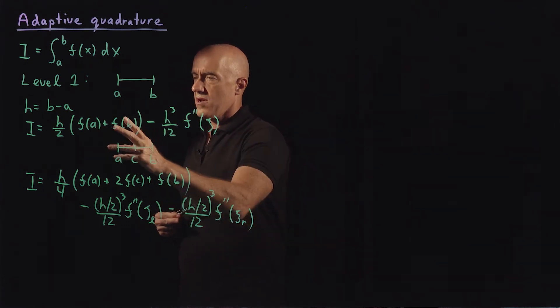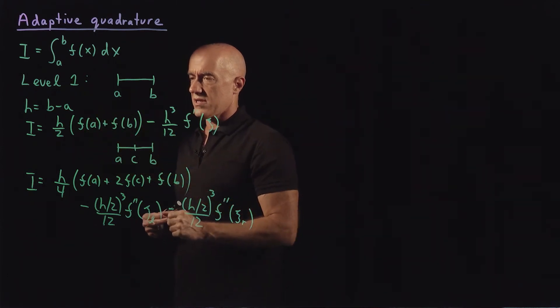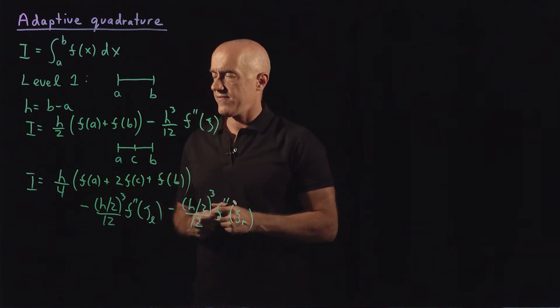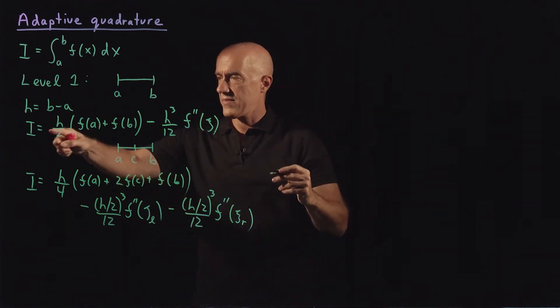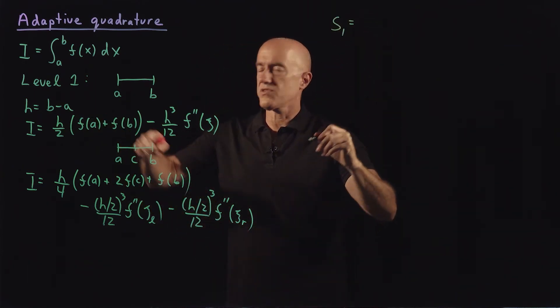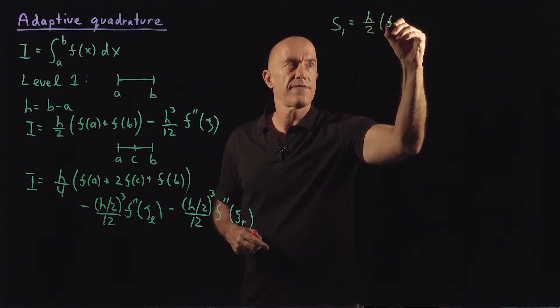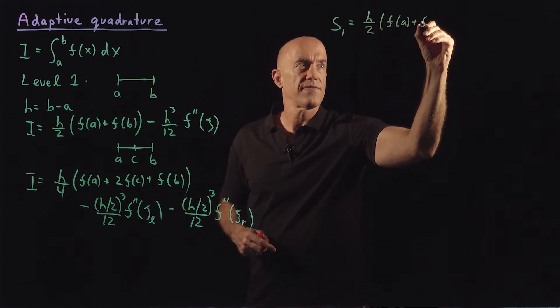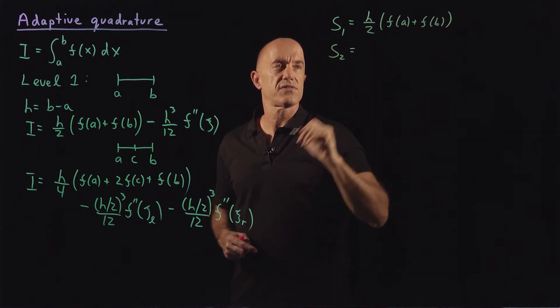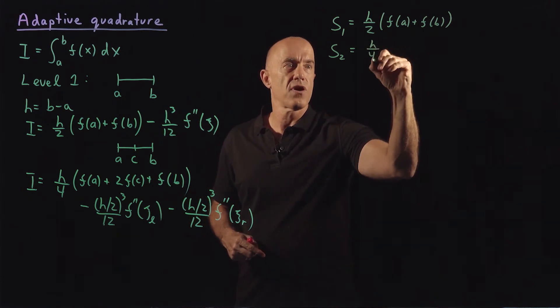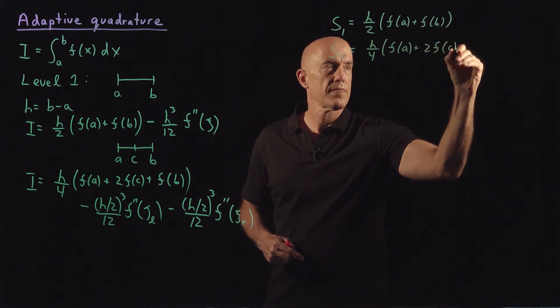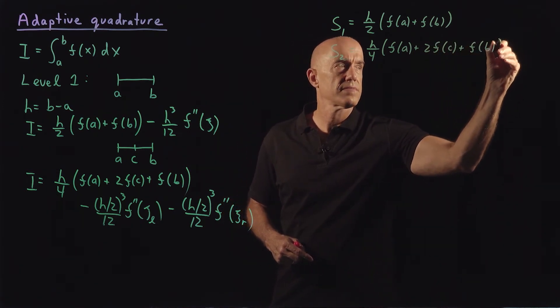So we want to know, this is level one, so it will never work at level one, but this is what we're going to do iteratively. At level one, we want to compare these two integrals. We can define s1 here is the first integral: h over 2 times f of a plus f of b. And we can define this second integral s2 is h over 4 times f of a plus 2f of c plus f of b.